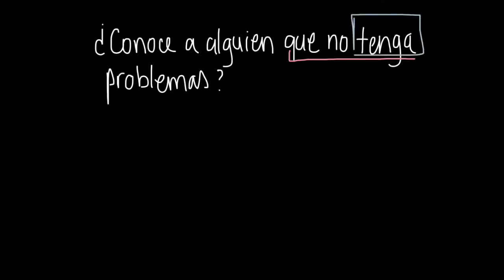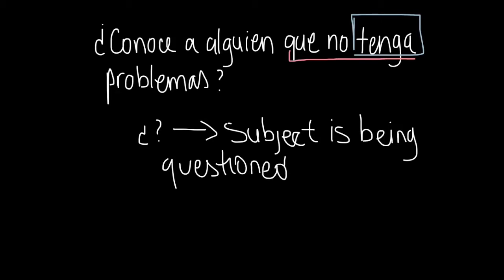Now when we have questions such as, conoce a alguien que no tenga problemas? Do you know anyone who doesn't have problems? So it triggers the subjunctive, que no tenga problemas, because the subject is in question. Meaning we still don't know if there is a person who we know doesn't have problems.